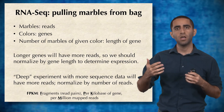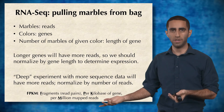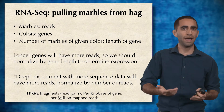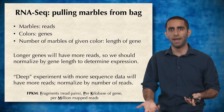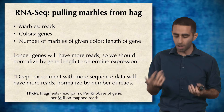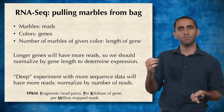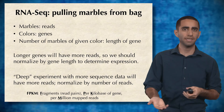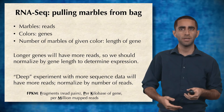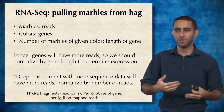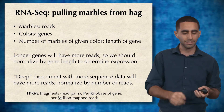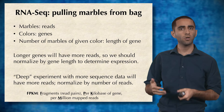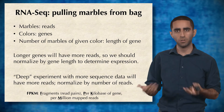Longer genes will have more reads — a longer gene is equivalent to a color that has more marbles in the bag. If you pull out random marbles and one color has more marbles, you're more likely to draw that color. So raw read counts are not an accurate measure of gene expression, because longer genes will always have more reads. We have to normalize by gene length in order to determine true expression.